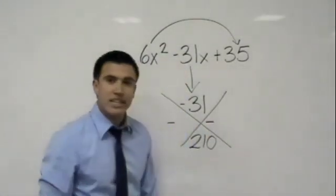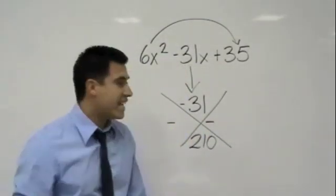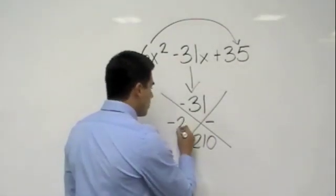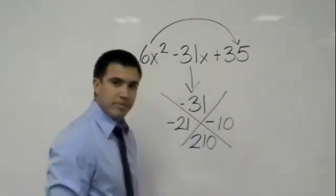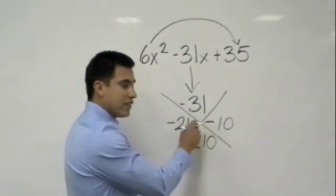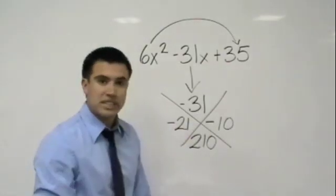Now we just have to find out what multiplies to 210 and adds to 31. That's 21 times 10. We know that a negative times a negative is a positive, and two negatives added together are negative. So we can see that works out.